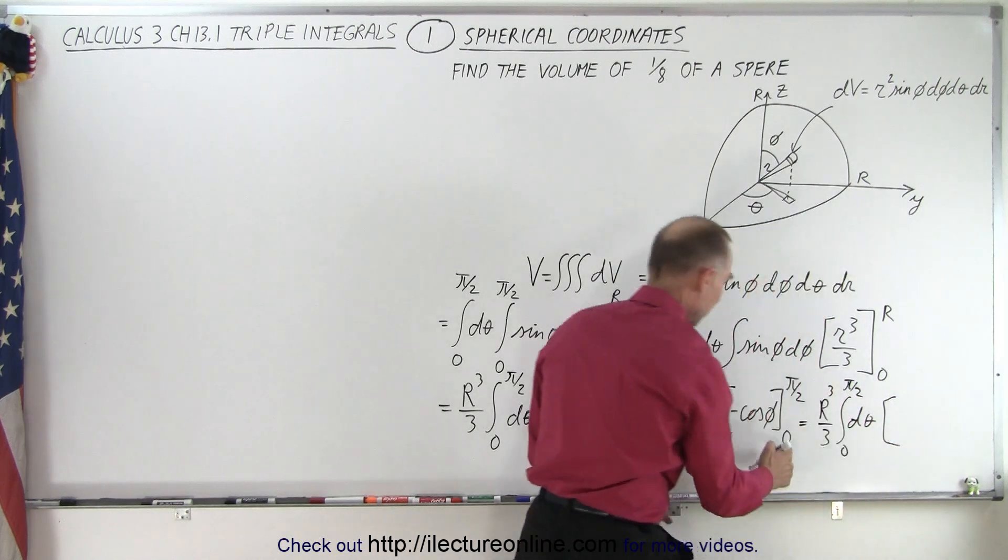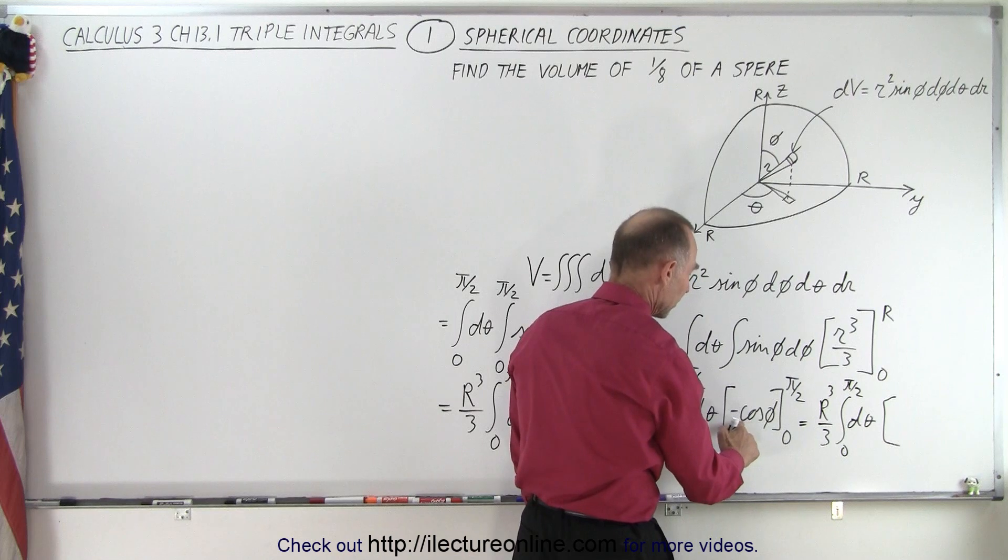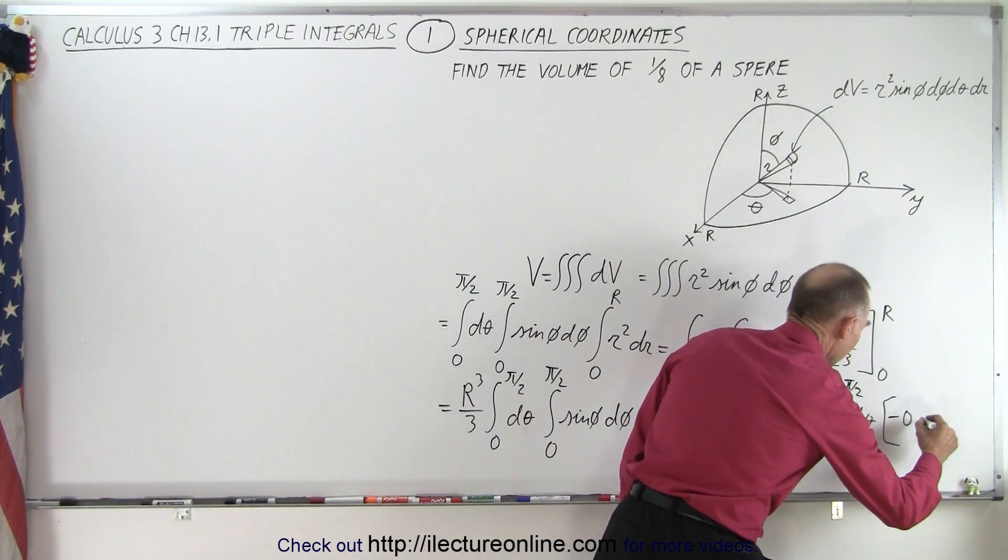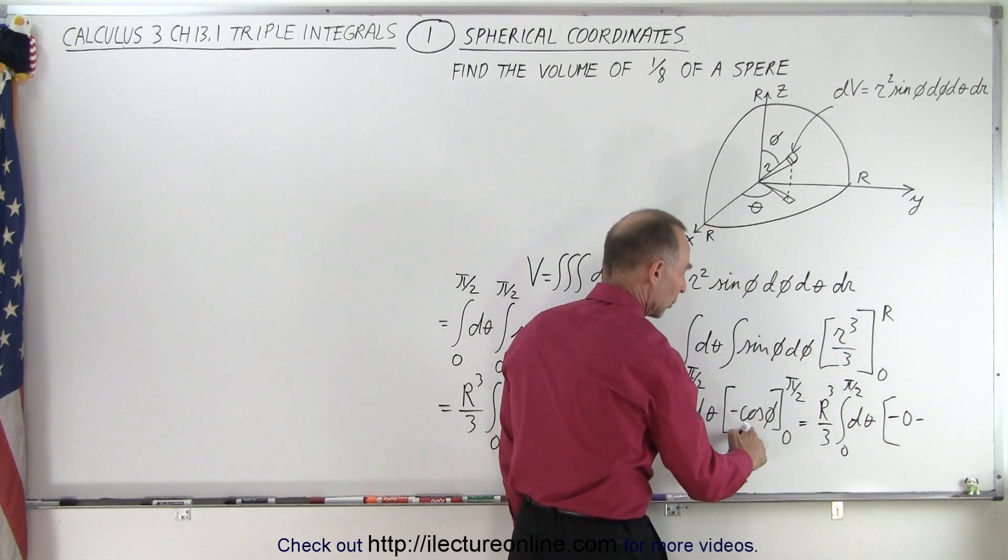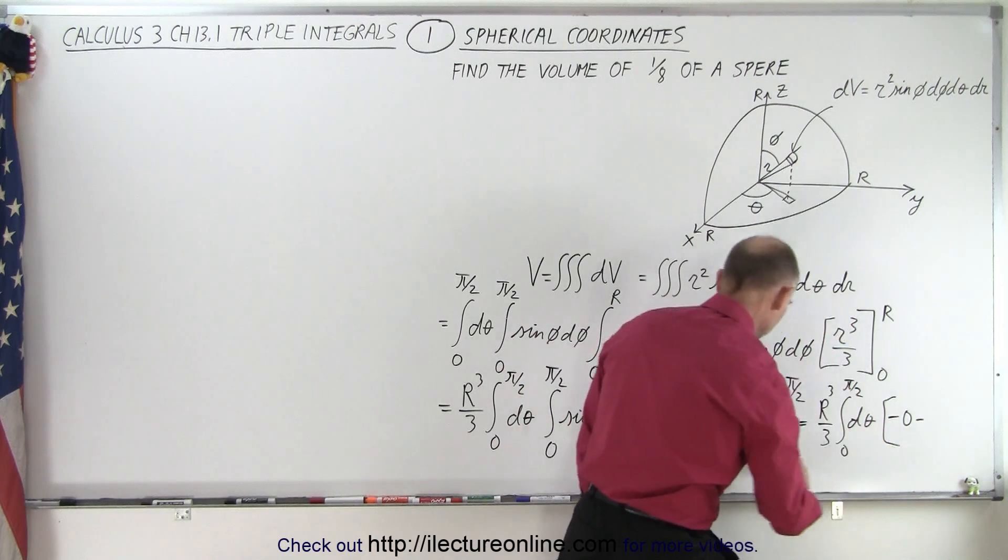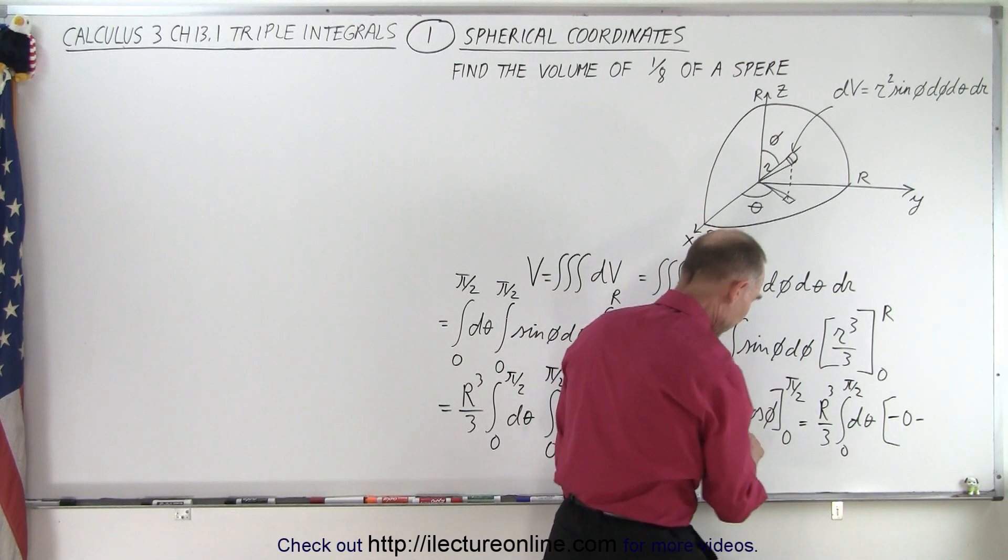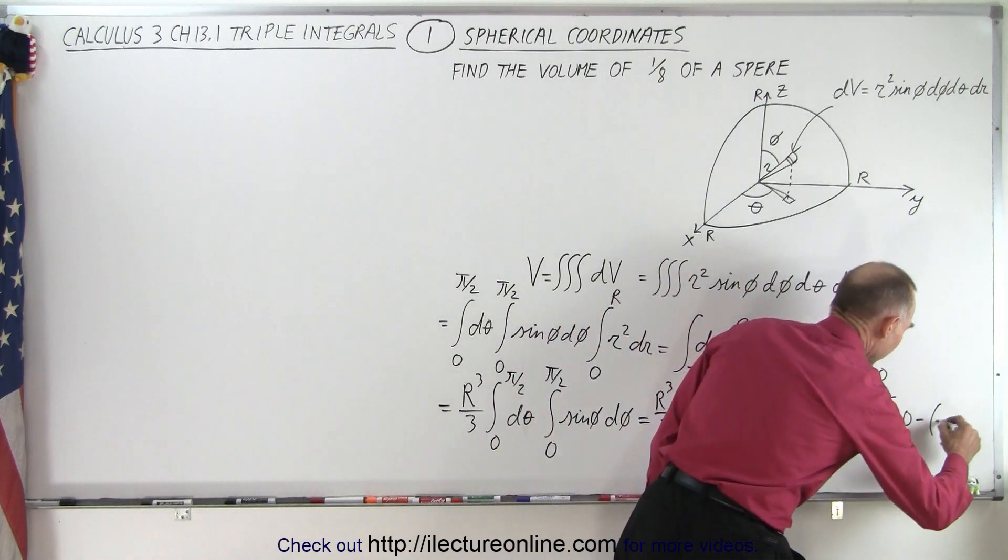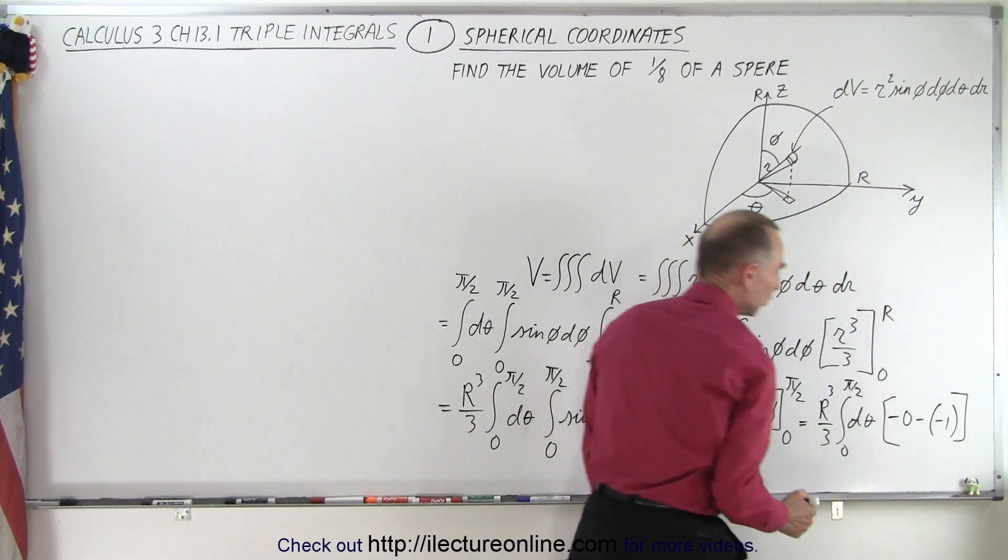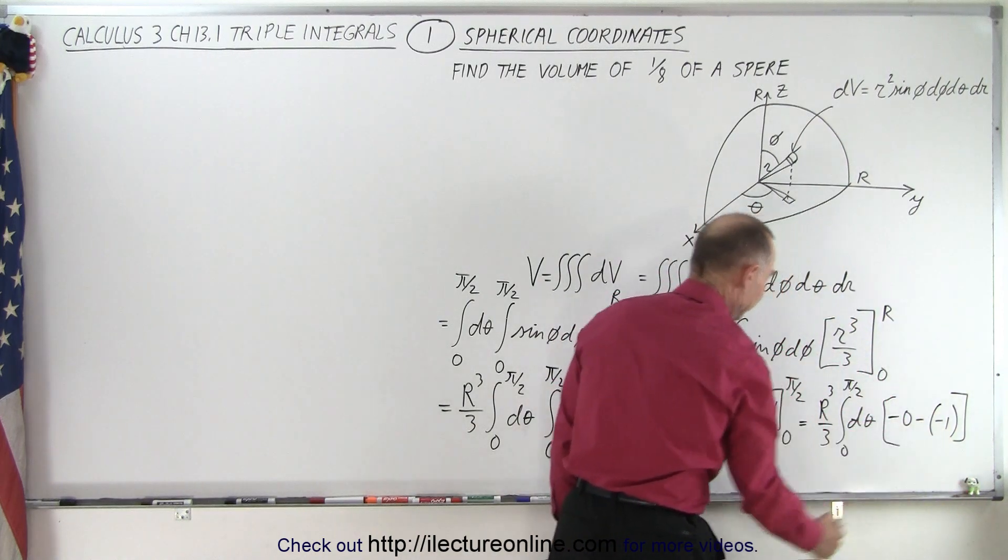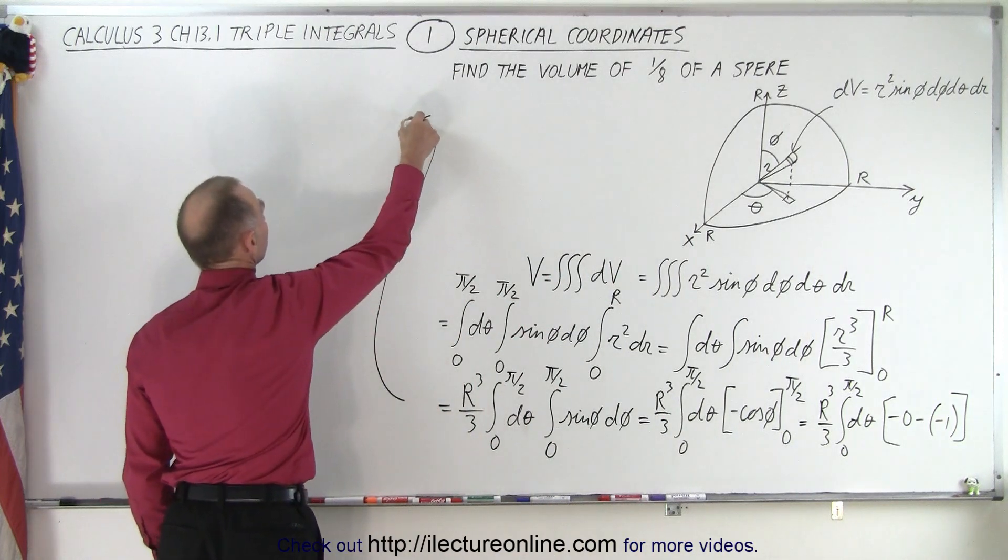So what is the cosine of pi over 2, 90 degrees, that's 0, and the cosine of 0 is 1, but we have to subtract that. So this becomes equal to r cubed over 3 times the integral of d theta from 0 to pi over 2. And then here we get, when we plug in the upper limit, we get minus 0, minus, when we plug in the lower limit, we get a 1, minus a minus 1, because we have the minus up here, so that would be minus 1, like this. And notice, that becomes a plus 1.